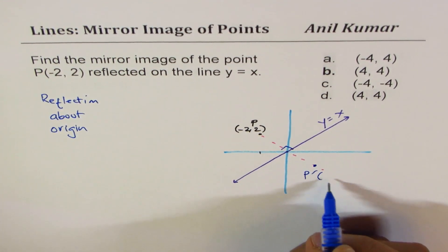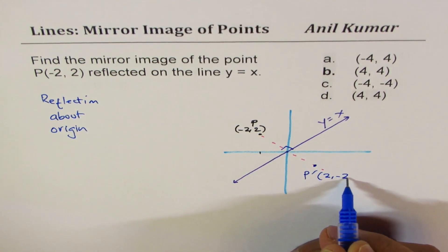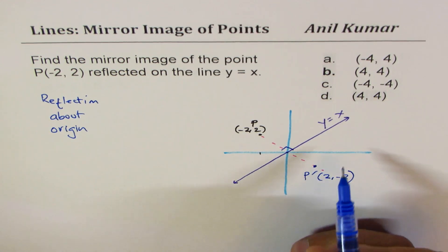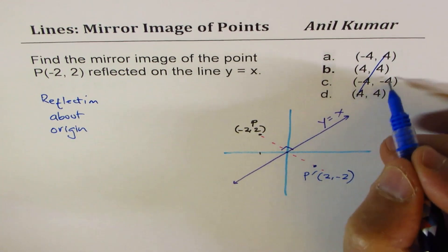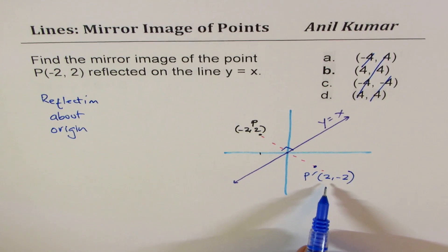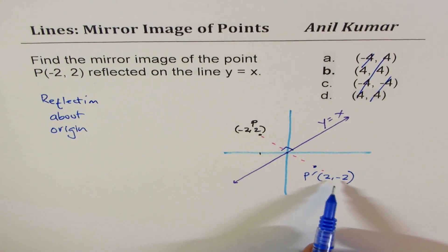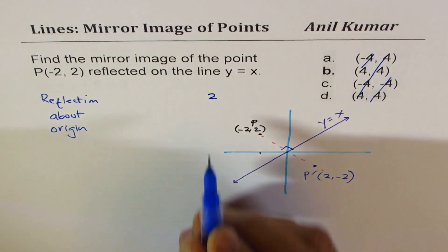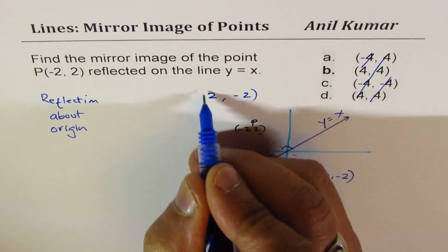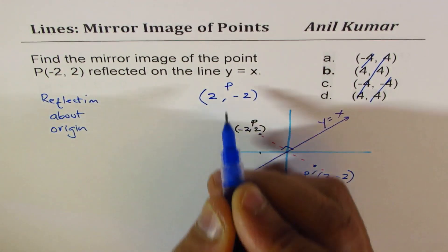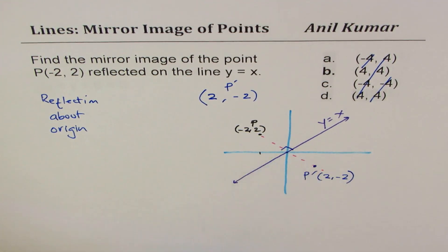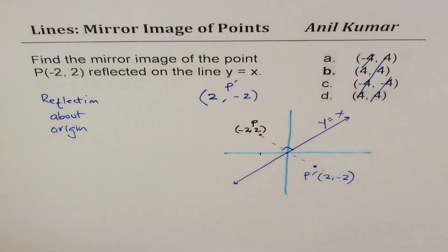We are expecting the image to have a positive x value and a negative y value. The correct answer should be (2, -2) — x value of 2 and y value of minus 2. Those will be the coordinates for the image of this point. Note: the answer choices in the problem were incorrectly typed, so the correct answer is (2, -2).